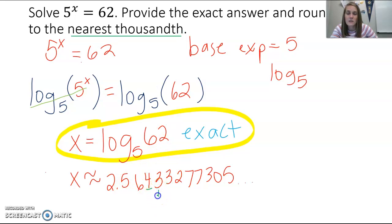And the three here, that's after the four, would cause us to round down. So it's going to be x is approximately, because we're rounding, 2.564 would stay our answer.